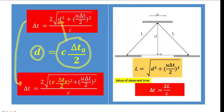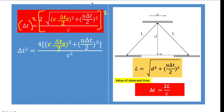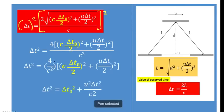Squaring both sides, delta t² equals 4 times the expression inside the radical, divided by c². The square root and the exponent 2 cancel, leaving the expression inside. We distribute the factor 4/c² to the binomial terms. When distributing to the first term, the c² in the numerator cancels with c² in the denominator, and the 4 in the numerator cancels with the 4 in the denominator, leaving delta t₀².